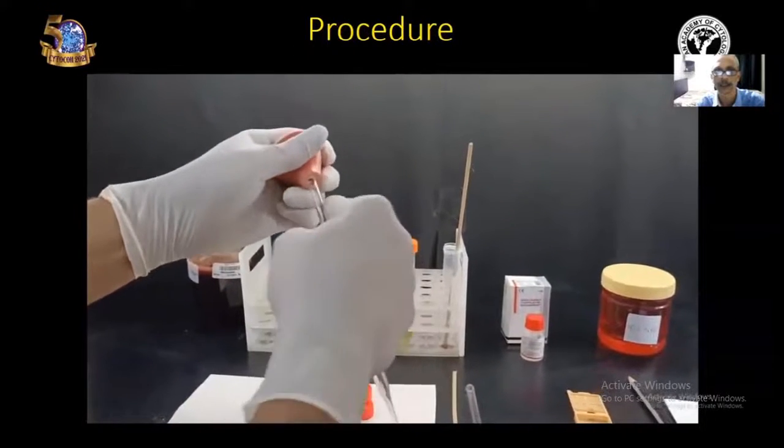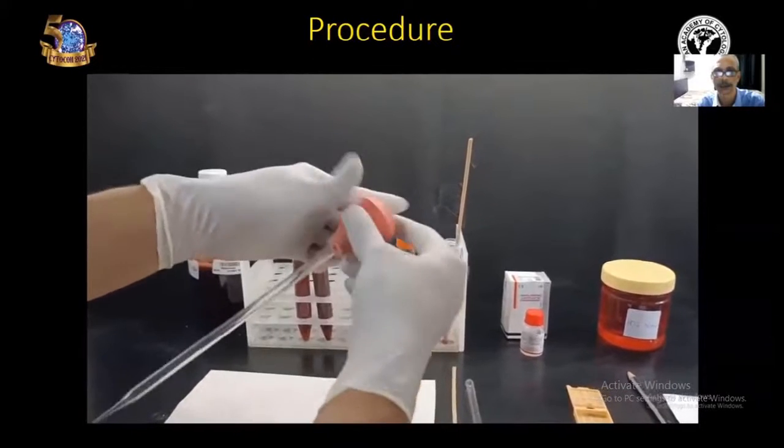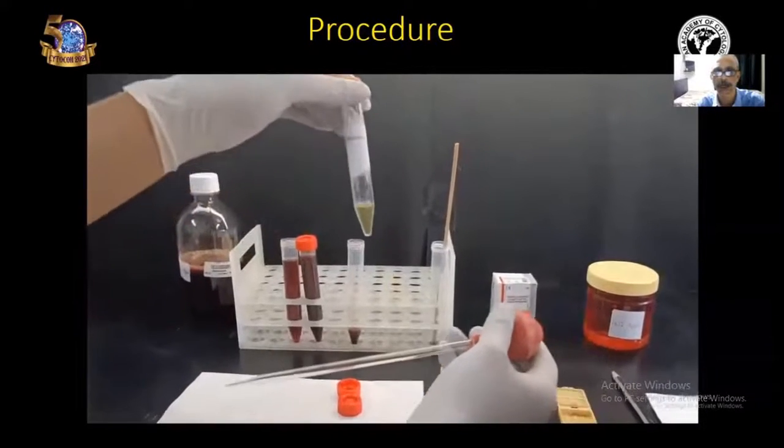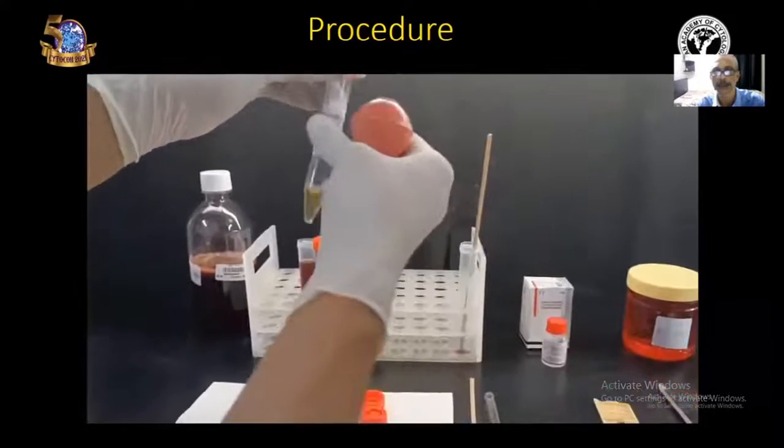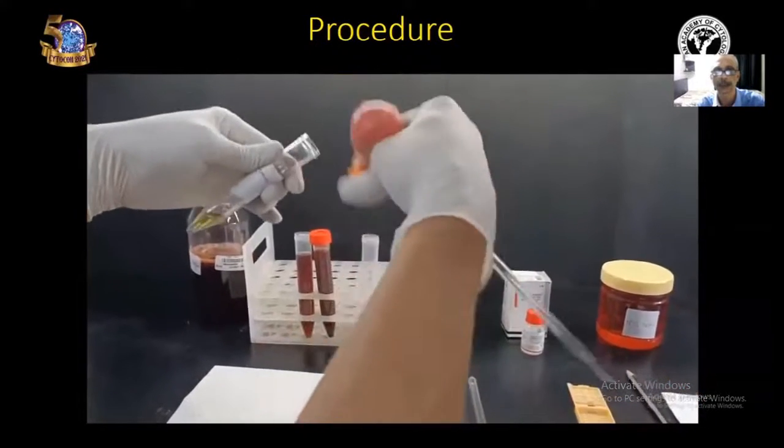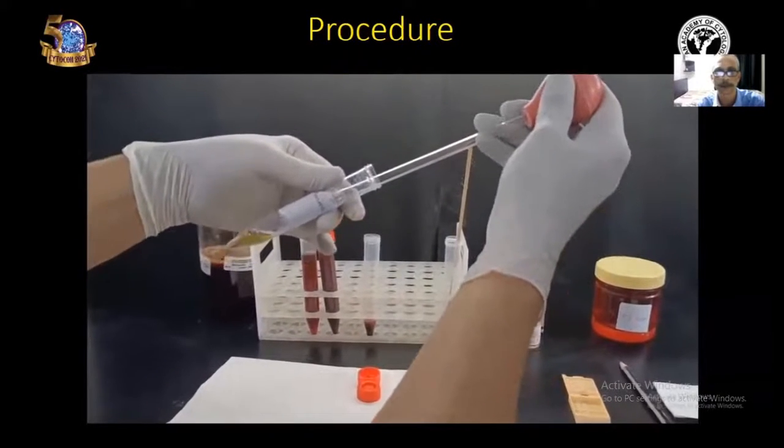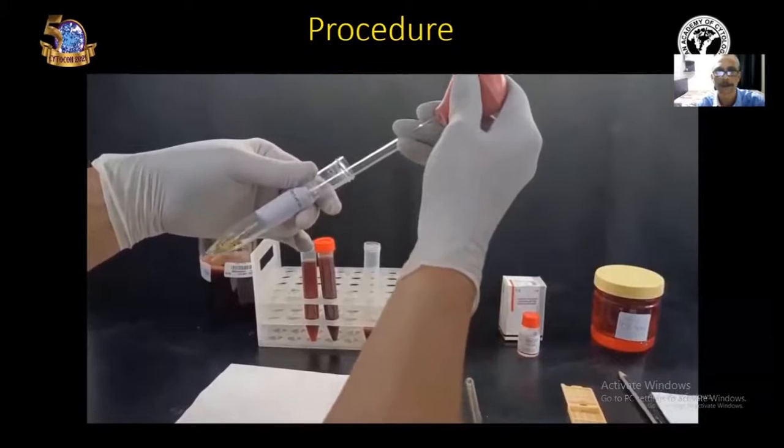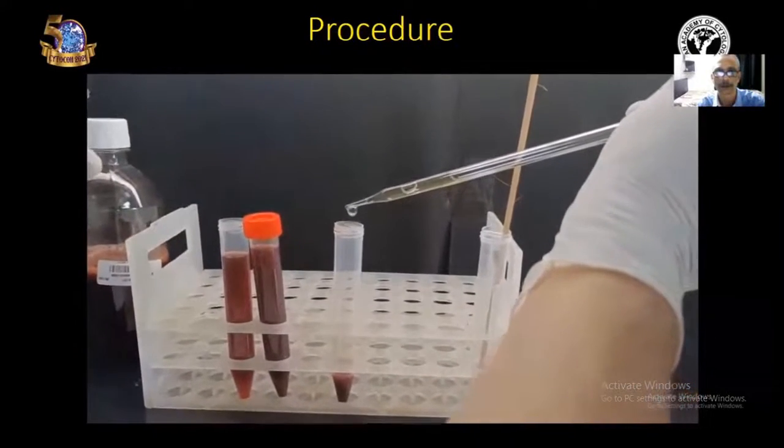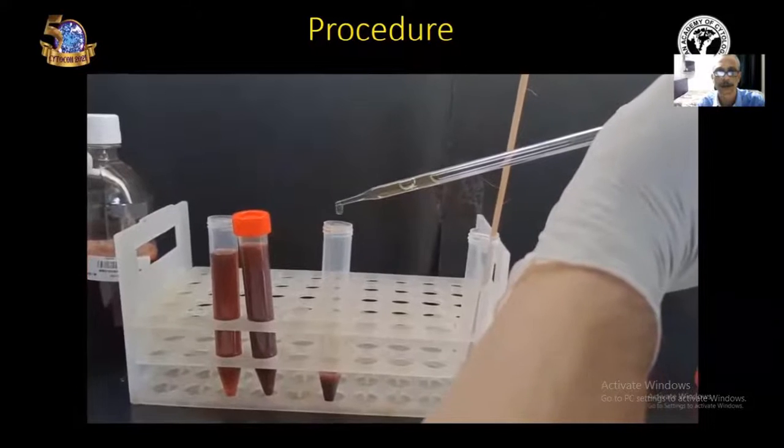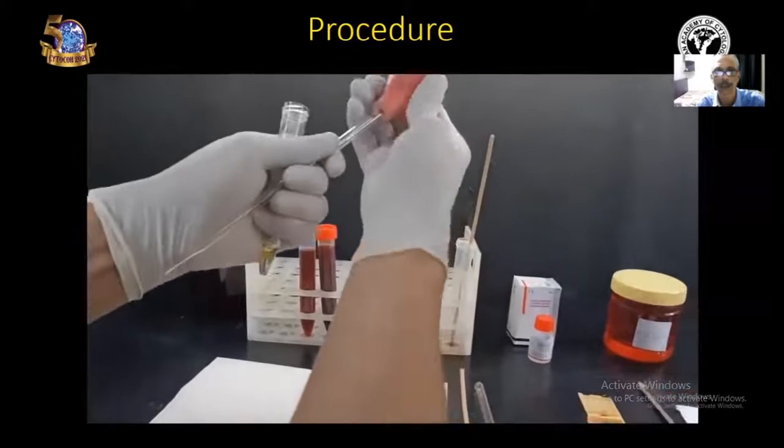Take the Pasteur pipette and take three drops of plasma and add it to the sediment. You can see slowly, three drops is being put into the tube. After putting the plasma...